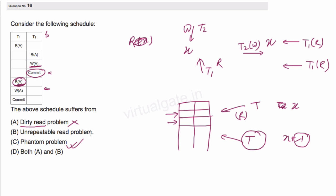Now let's check for the unrepeatable read problem. Transaction T1 is performing a read on variable a here, and then transaction T1 is performing a read on the same variable again. Between these two read operations, there is a write by another transaction. This write has changed the value of variable a, so what T1 reads the second time may be different from what it read the first time. It means T1 is getting two different values across its two reads. So in this schedule, we have the problem of unrepeatable read. That is our correct option.